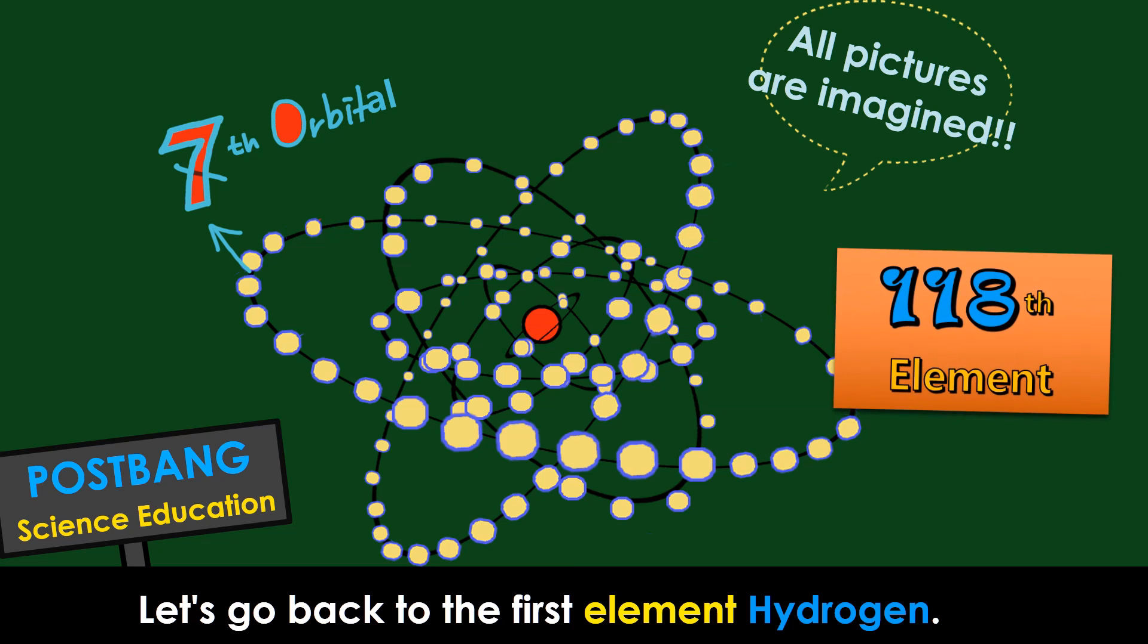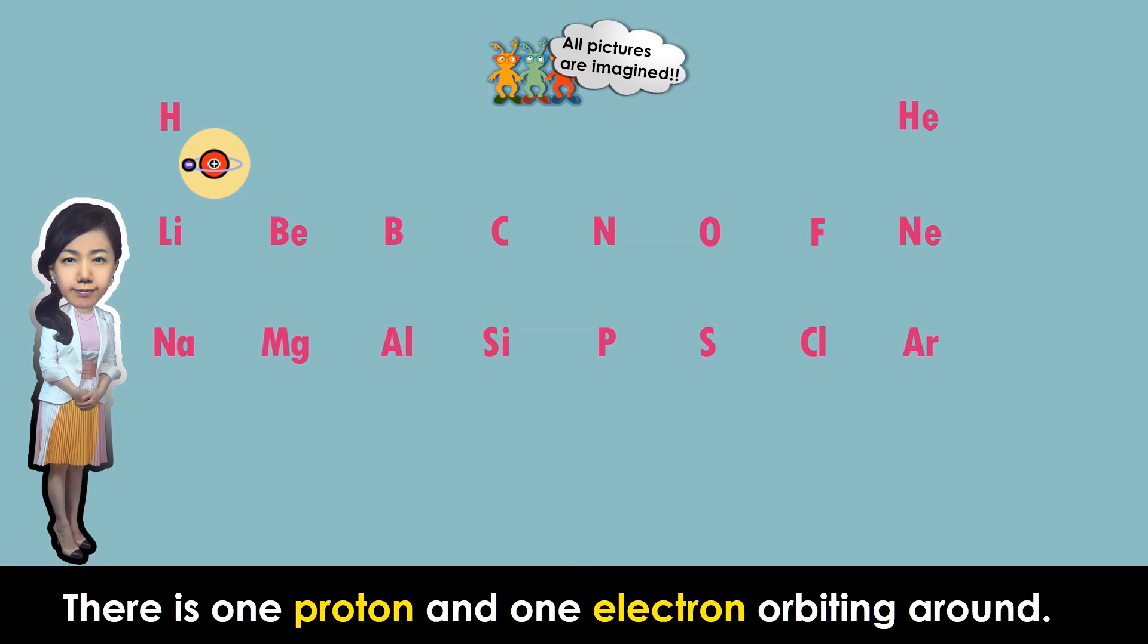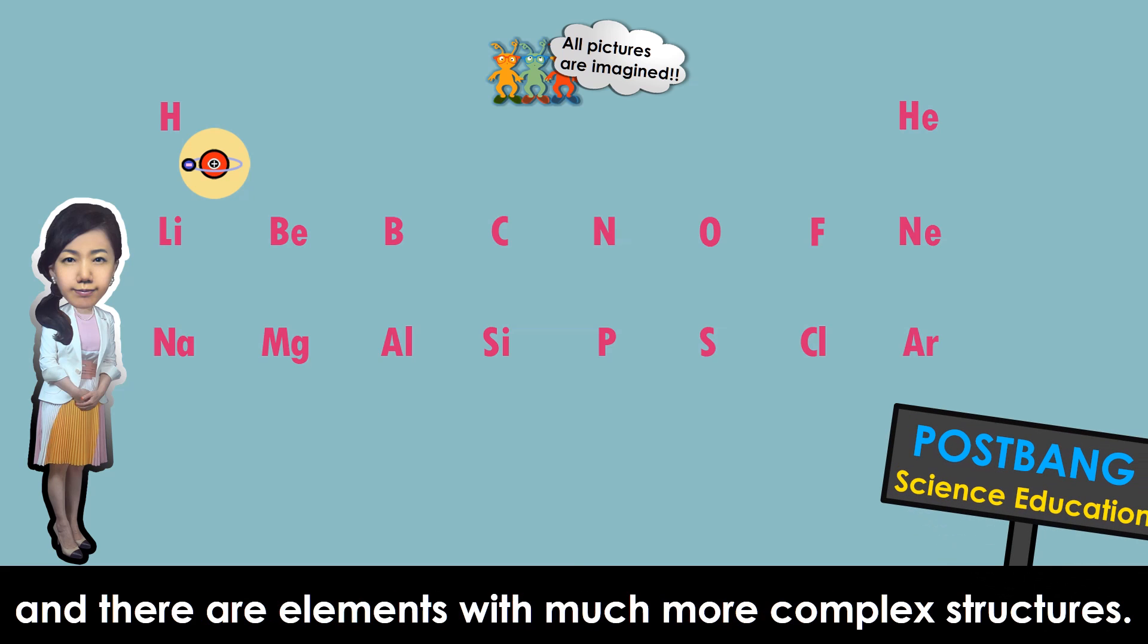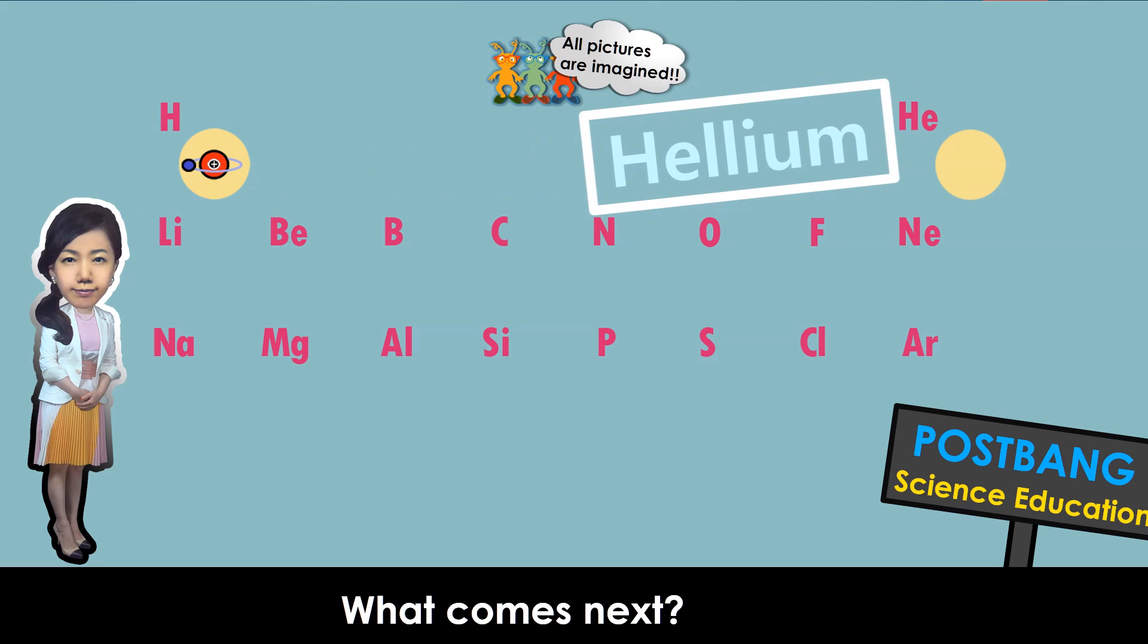Let's go back to the first element, hydrogen. There is one proton and one electron orbiting around. Hydrogen is the simplest element, and there are elements with much more complex structures. What comes next?